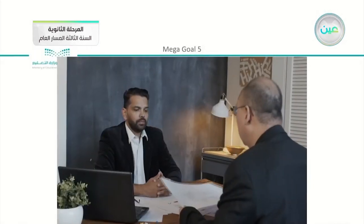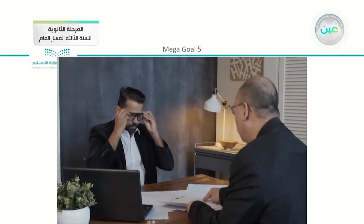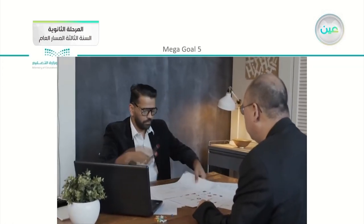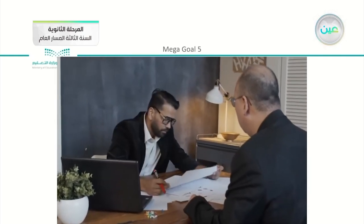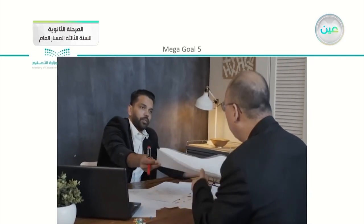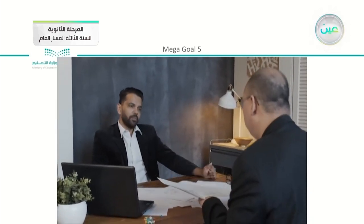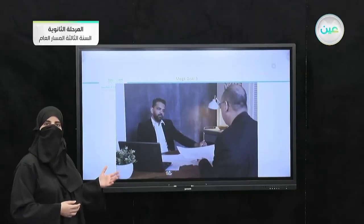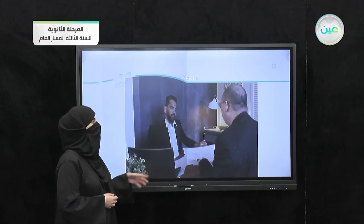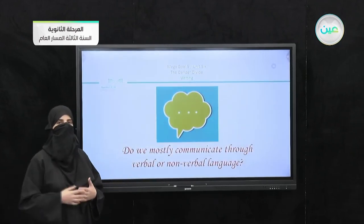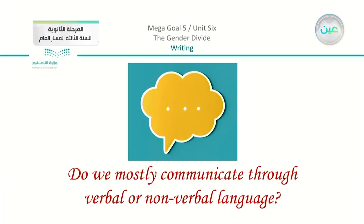In this other video, we have another man. We can see from his facial expressions that he looks very serious and is approving something. We understand he is approving — he is using his facial expressions, gestures like his hands, and he is nodding. So all of these are ways to understand a conversation without even listening. Now, do we mostly communicate through verbal or nonverbal language?